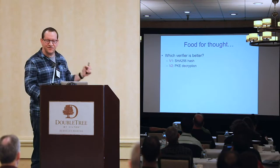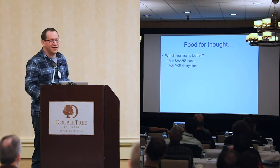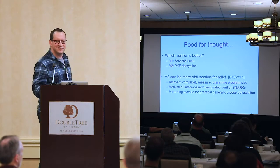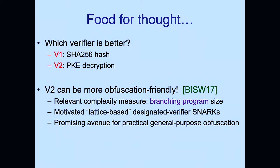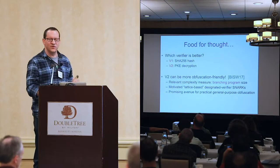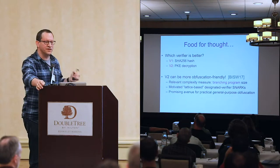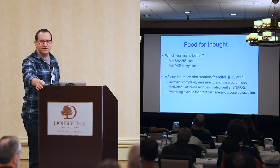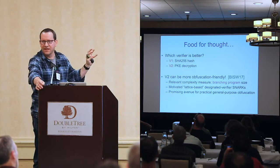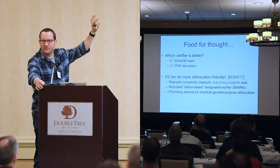However, for a specific application — general-purpose obfuscation — the opposite is true. Since 2013, work by Garg et al. introduced the theoretical possibility of general-purpose obfuscation. One promising implementable approach uses the fact that SNARK verification is an obfuscation-complete task: with a fully homomorphic encryption scheme, the obfuscated code includes an FHE encryption of your program and an obfuscation of something performing FHE decryption and SNARK verification.